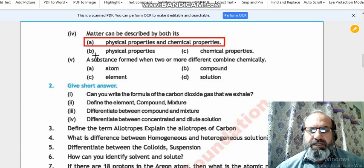There are two options. Option B, there are only physical properties. Option C, there are only chemical properties. Option A is the right option.